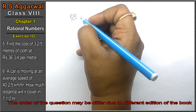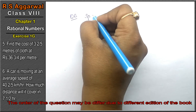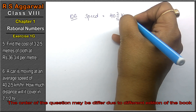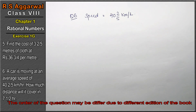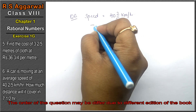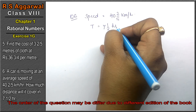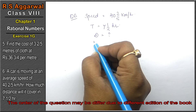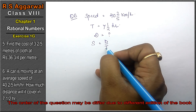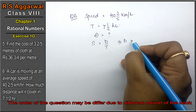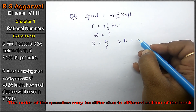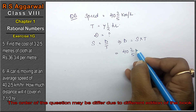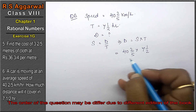Let's do question number 6 of exercise 1G on rational numbers. A car is moving at an average speed of 40 and 2/5 km per hour. How much distance will it cover in 7 and a half hours? Time is 7 and 1/2 hours. Distance equals speed multiplied by time.